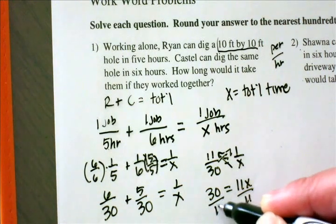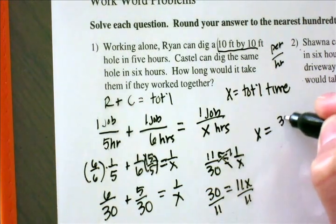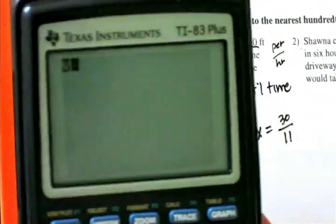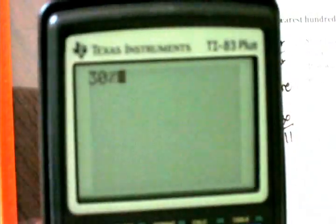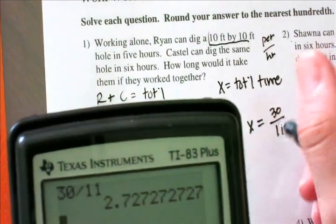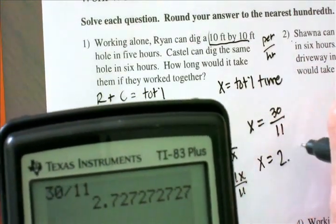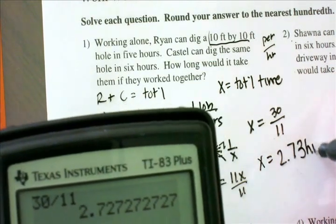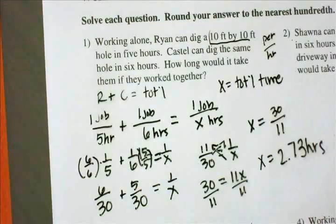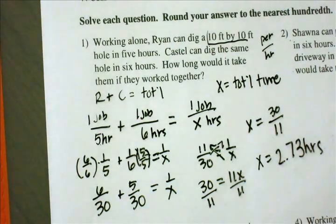Divide by 11 to give me x equals 30 over 11. Putting that into my calculator: 30 divided by 11 equals 2.727 repeating. Rounding to the nearest hundredth, x equals 2.73 hours. If you look at the answer sheet that CUDA software gives you, the answer is 2.73 hours.